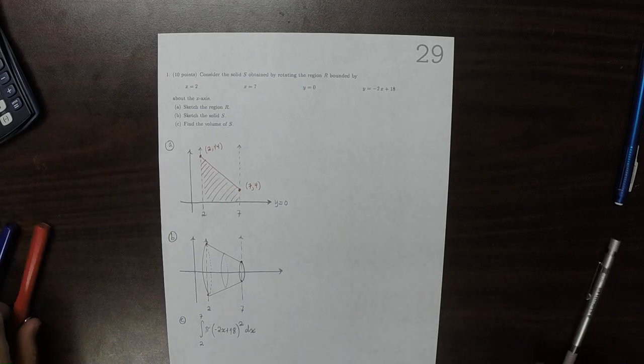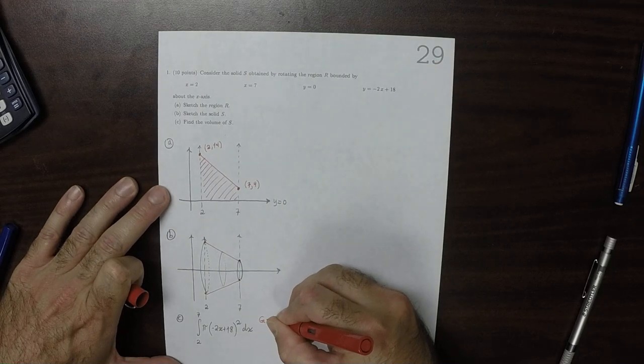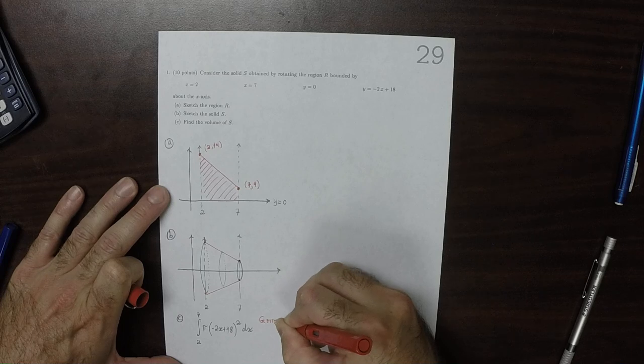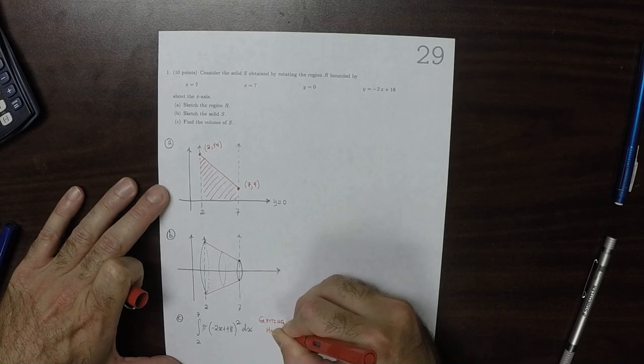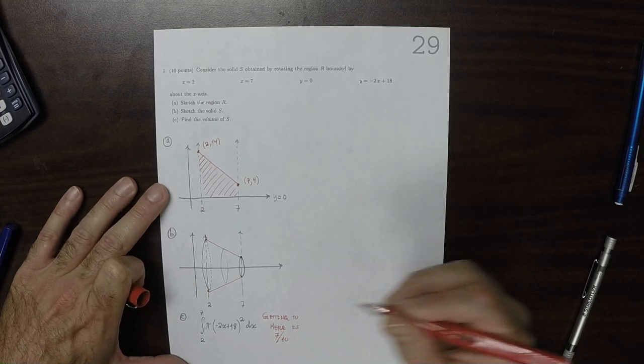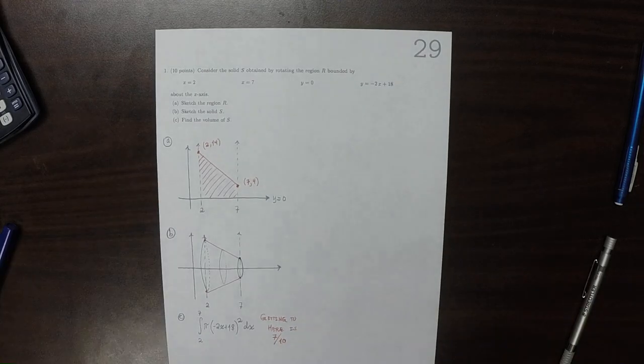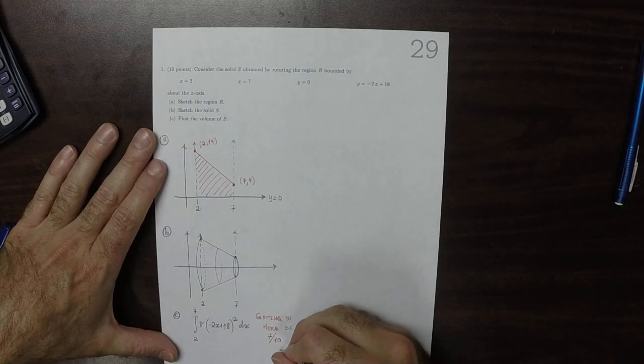So getting to here is 7 out of 10 points. So getting to this place and then evaluating the integral from here is the rest.